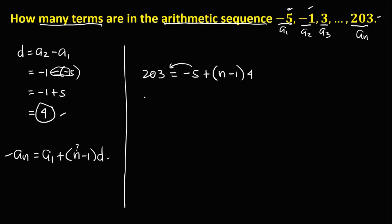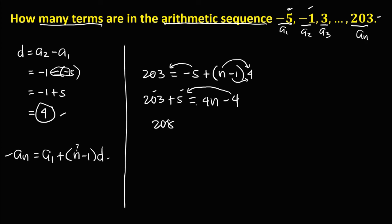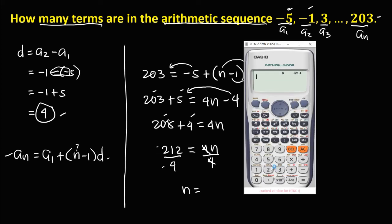Then simplify: transpose the negative 5, so we have 203 plus 5 equals. Distributing, n times 4 is 4n, and negative 1 times 4 is negative 4. Simplifying, that becomes 208 equals 4n. Dividing both sides by 4, we get 212 divided by 4, that's 53. So n is equal to 53.